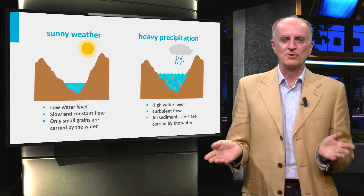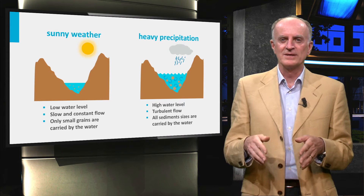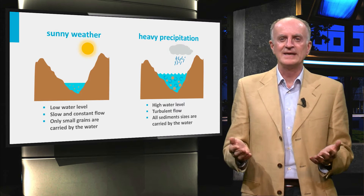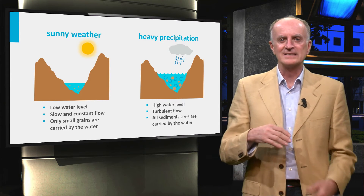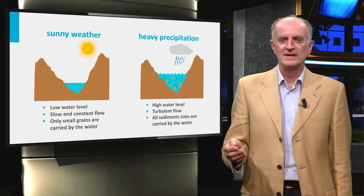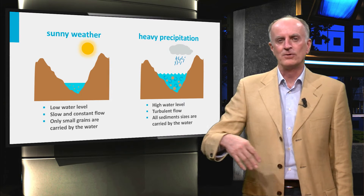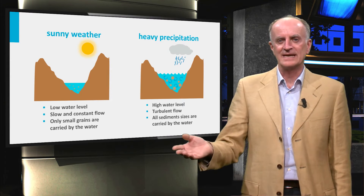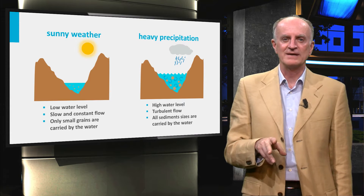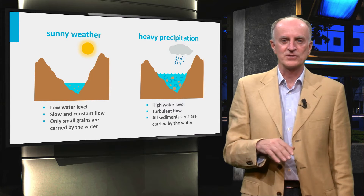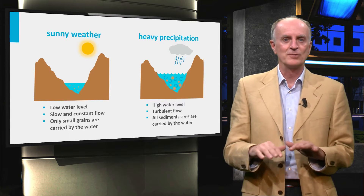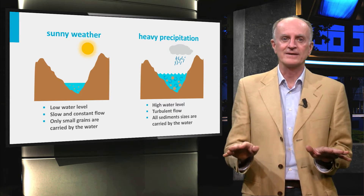When precipitations go back to normal, waters will flow regularly and clean sediments falling from the slopes, carrying away all the grains that can and leaving behind only those which are too heavy. A short time after the storm, waters are clear.